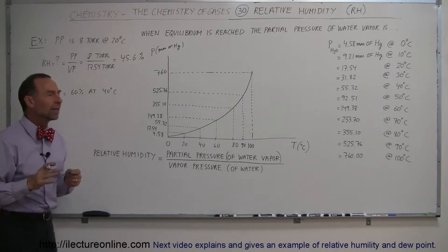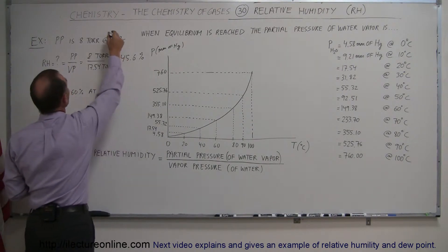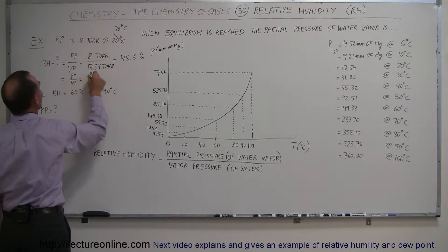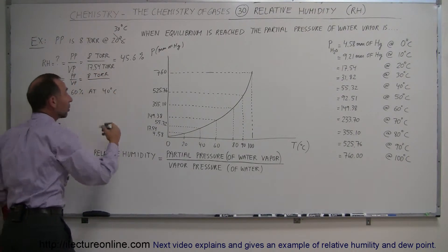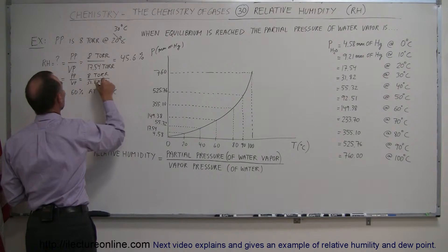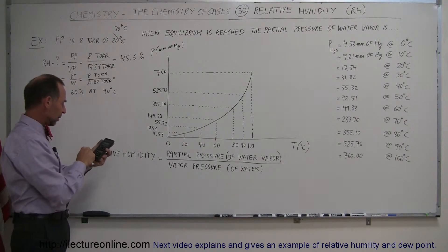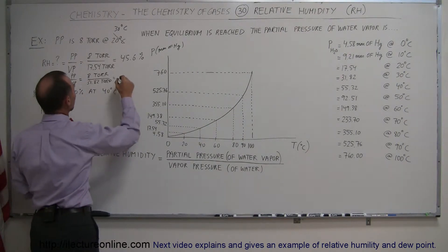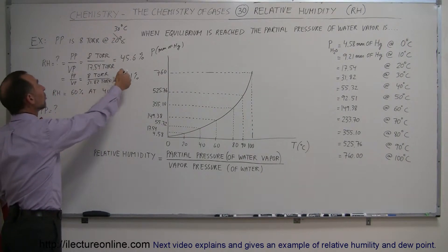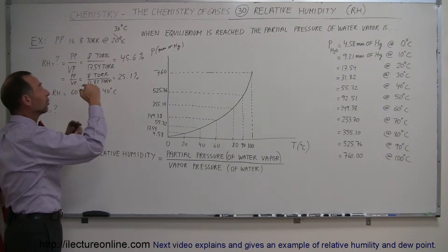Now, what if the amount of moisture in the air did not increase — stayed the same — but the temperature goes up to 30 degrees centigrade? The relative humidity would equal the partial pressure divided by the vapor pressure, which is 8 torr divided by 31.82 torr — since at 30 degrees the air can hold as much as 31.82 millimeters of mercury. So 8 divided by 31.82 gives us 25.1%. The amount of moisture in the air did not change whatsoever, but the relative humidity is much lower because at higher temperatures the air can hold a lot more moisture, so as a percentage of the total it can hold, it is much less.